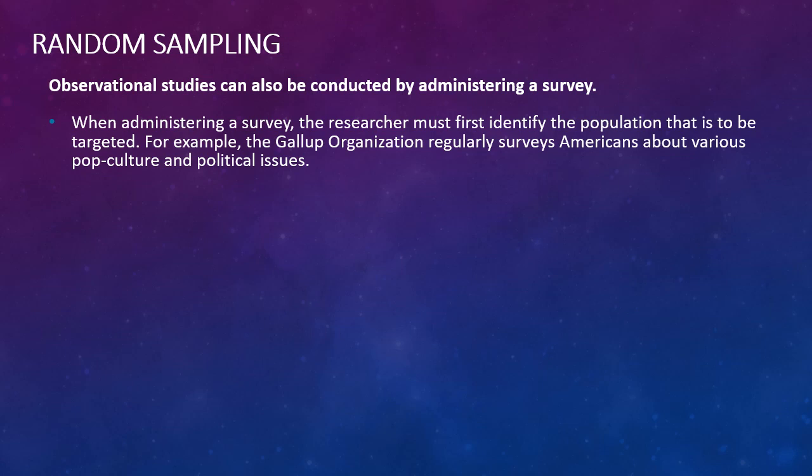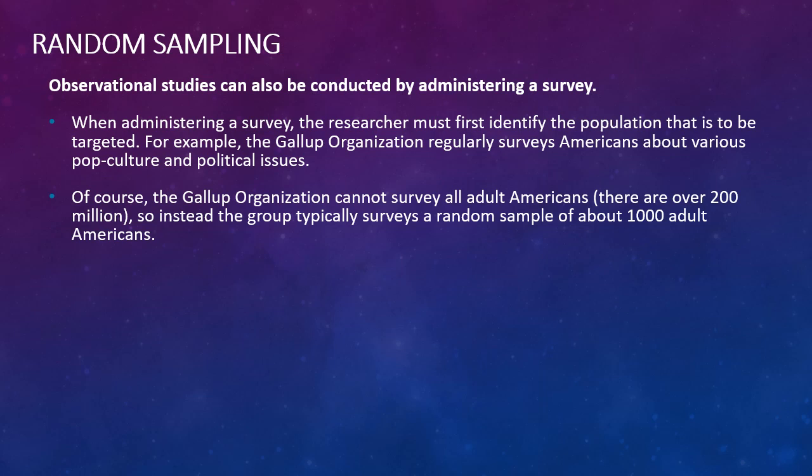The Gallup Organization is a huge surveying company and they regularly survey Americans about various items. Of course they cannot survey all adult Americans, or any subgroup of Americans, because in this case for adult Americans there are over 200 million. So instead, organizations and people typically survey a random sample of that overall population. Here the Gallup Organization typically surveys a random sample of about 1,000 adult Americans.